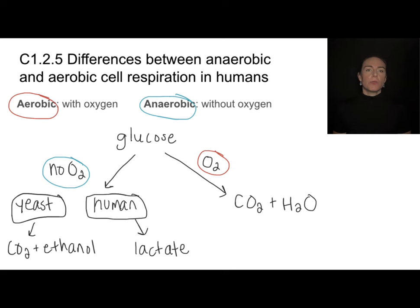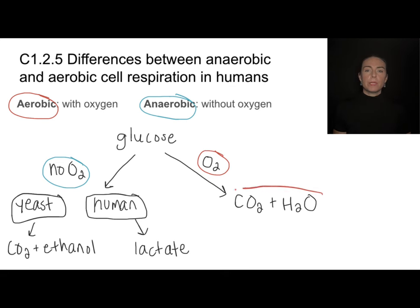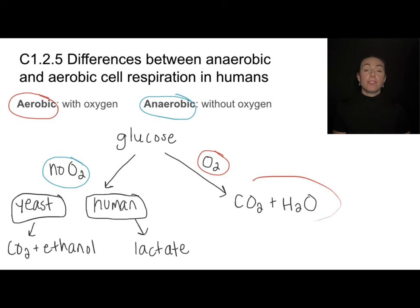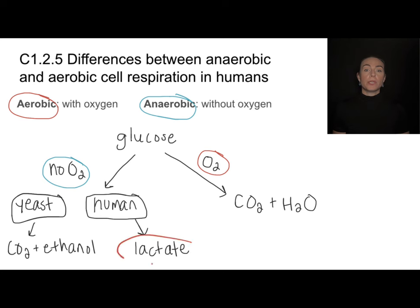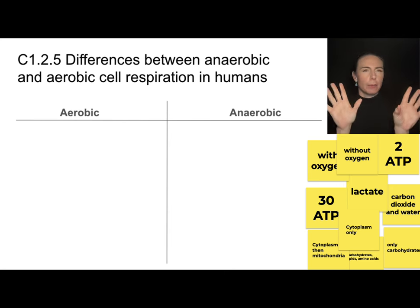The big difference is that humans will take glucose and put it through a respiration pathway regardless of whether there is oxygen or not. With oxygen, we produce carbon dioxide and water as byproducts. Without oxygen, we produce lactate in this anaerobic pathway. Let's distinguish between aerobic and anaerobic pathways a little more holistically.